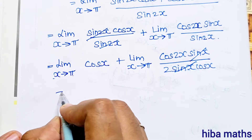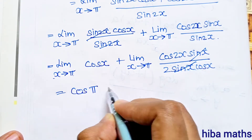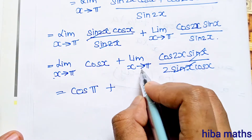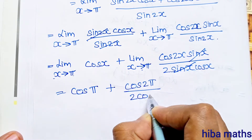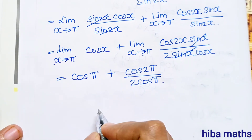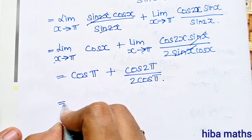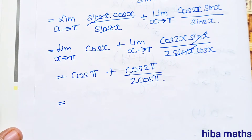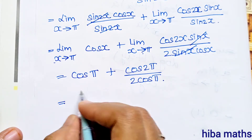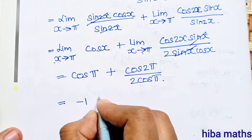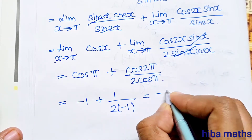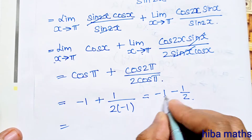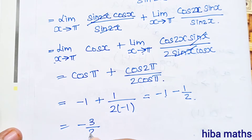When x turns to pi, the first term gives cos pi. Substituting x = pi: cos pi is minus 1. For the second term, we get cos 2pi divided by 2. Cos 2pi equals 1, and cos pi is minus 1. So the result is minus 1 plus 1 divided by 2, which gives minus 3 by 2.